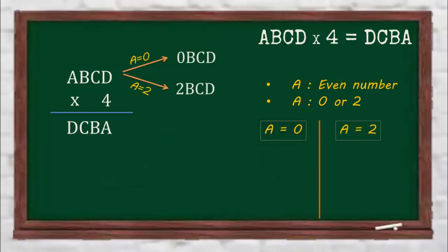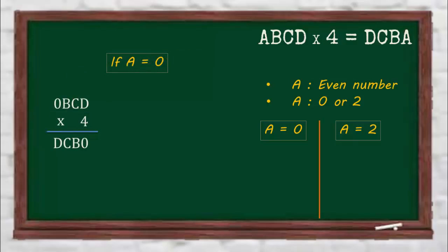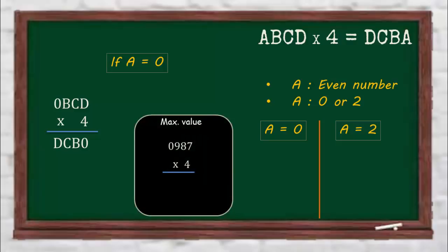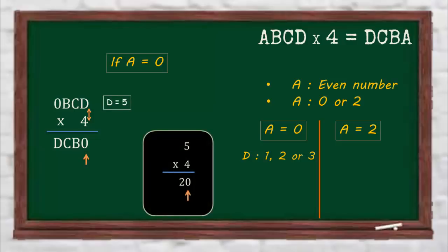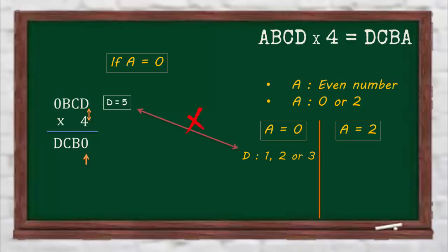Even though a number is not normally represented with a 0 appended at the left, since it's an encrypted number, it's logical to consider this possibility. Consider the first case where A equals 0. The maximum value of the number can be 987 because the digits have different values, so the maximum thousands digit of the output is 3. That means the possible values of D are 1, 2, or 3 — it can't be 0 because A already has that value. But 4 times D must give a units digit of 0, which only happens if D equals 5. Since these two conclusions contradict each other, the case A equals 0 is invalid and can be eliminated.